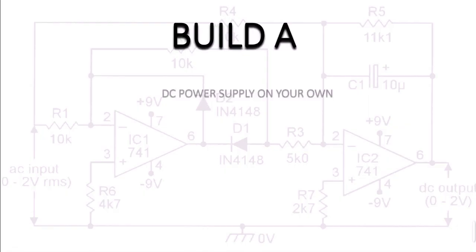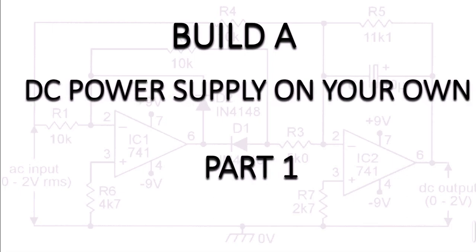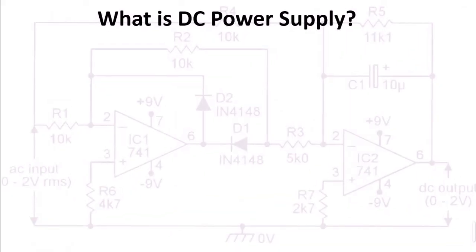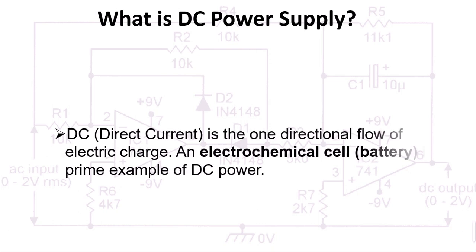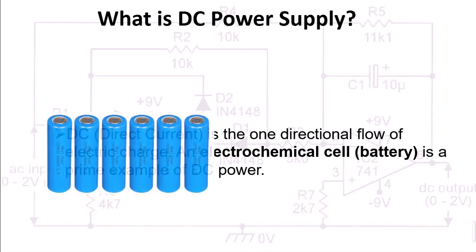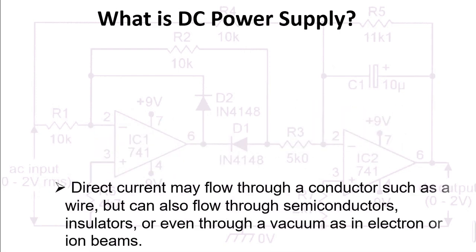Build a DC power supply on your own, part 1. What is a DC power supply? A DC power supply is one that supplies a constant DC voltage to its load. Depending on its design, a DC power supply may be powered from a DC source or from an AC source such as the power mains. DC, or direct current, is the one-directional flow of electric charge. An electrochemical cell or battery is a prime example of DC power. Direct current may flow through a conductor such as a wire, but can also flow through semiconductors, insulators, or even through a vacuum.